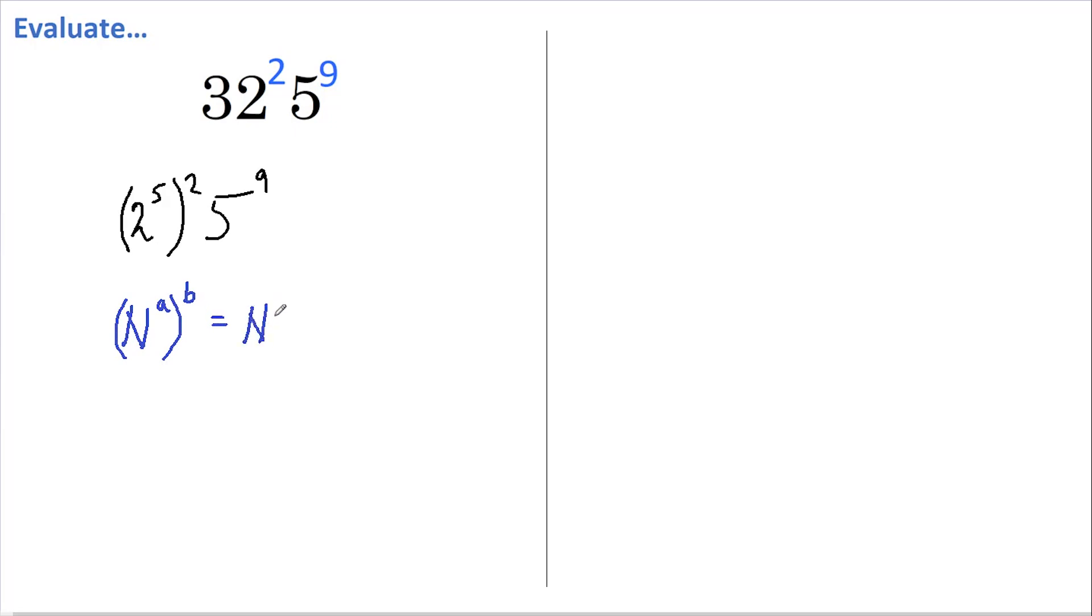This therefore becomes 2^(5×2), and we still have 5⁹, so this is simply 2¹⁰ × 5⁹.